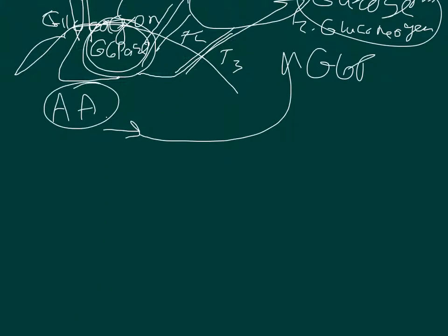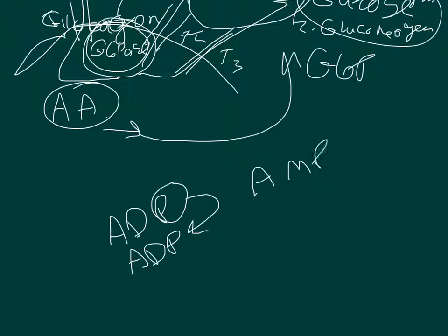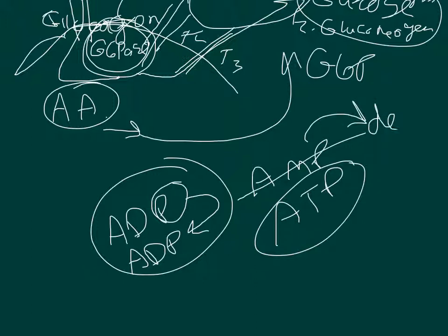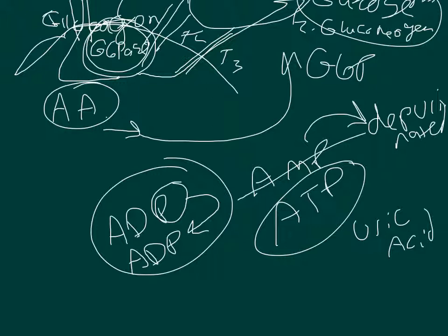Another thing that happens involves your muscle cells. Whenever you have two ADPs and are really low on energy, your muscles will steal a phosphate group from one ADP and add it to the other, giving you AMP and ATP. AMP then gets depurinated, and that depurinated AMP produces uric acid. Under extreme glucose deficiency and oxygen debt, your muscles start producing uric acid that gets into your blood, causing acidosis.